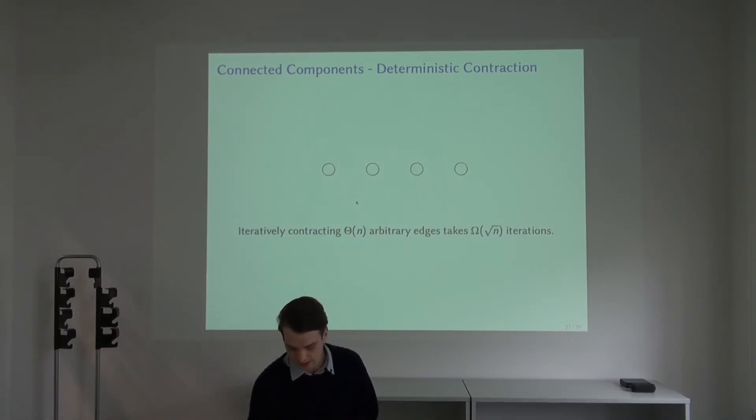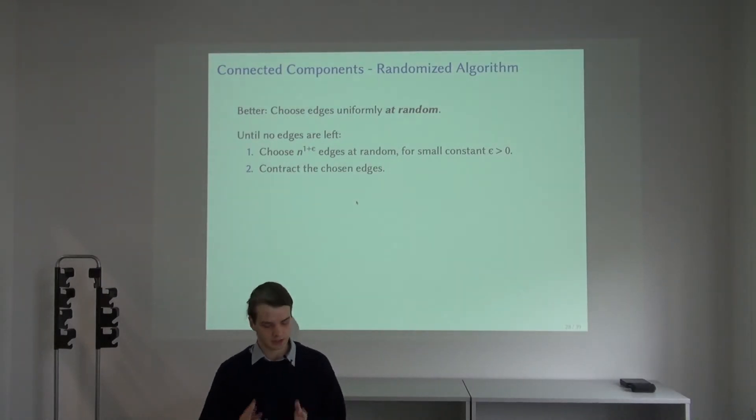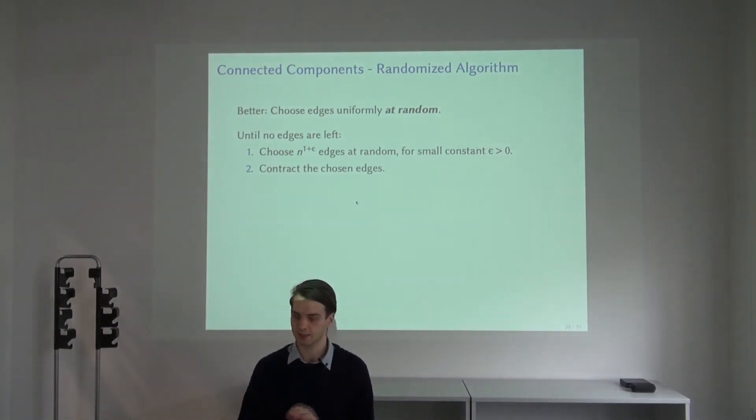This is why we have some hope that choosing edges uniformly at random leads to good results. This is indeed what we find. The algorithm chooses some set of edges. We need to choose slightly more than a linear number of edges in the vertices, and then we contract them.